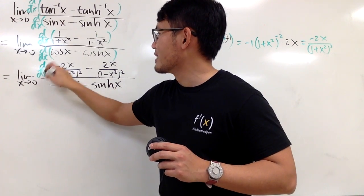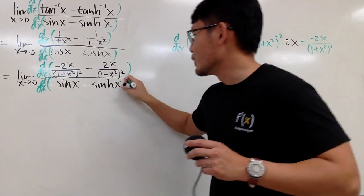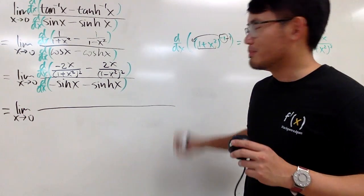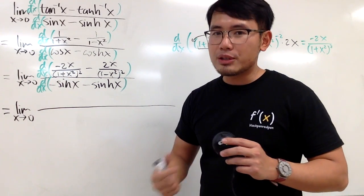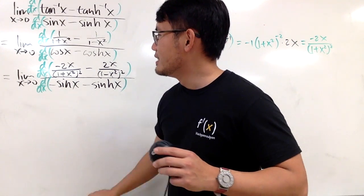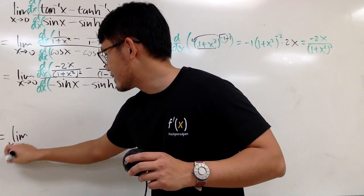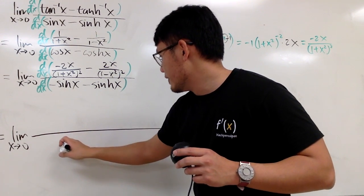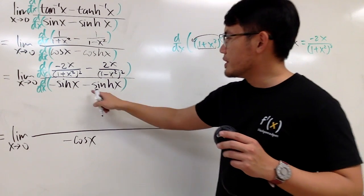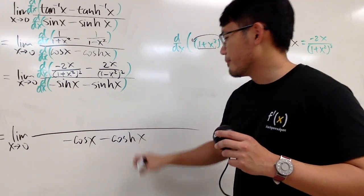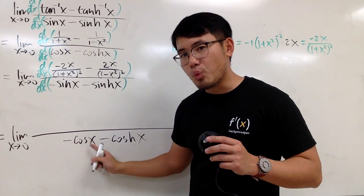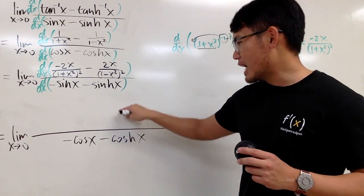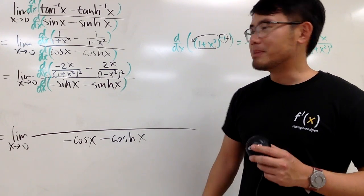If you put 0 into all the x, on the top it's 0, on the bottom it's again 0. So just one more L'Hôpital's. This is the limit as x approaching 0, and now this is some serious business, because to differentiate this right here we actually have to use the quotient rule, and as you can see it's not an easy expression. Let's do the bottom one first. The derivative of negative sinh is negative cosh, and the derivative of negative sine is negative cosine. If x is approaching 0, you get negative 1 minus 1, so on the bottom you have negative 2. You know you're not going to get 0 over 0 because the bottom is not 0.